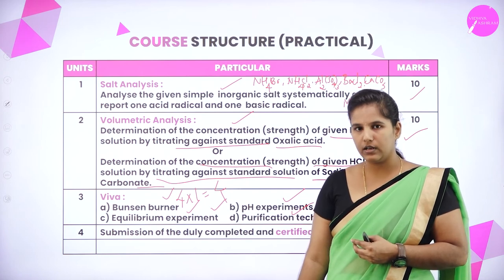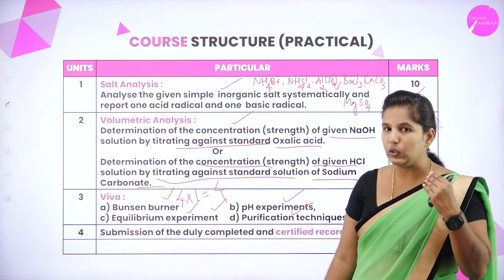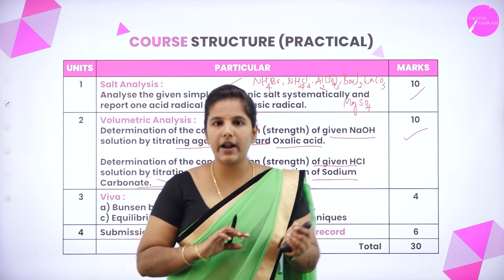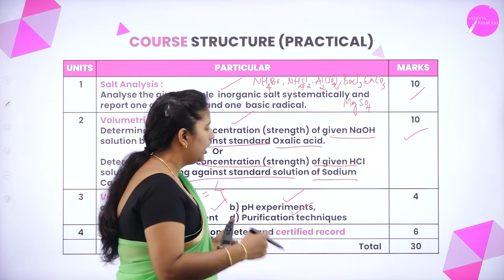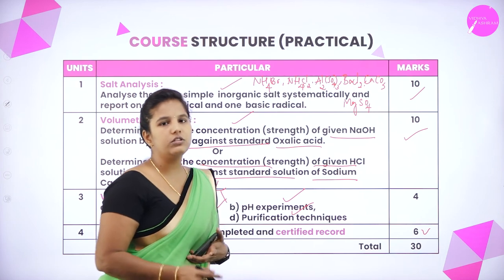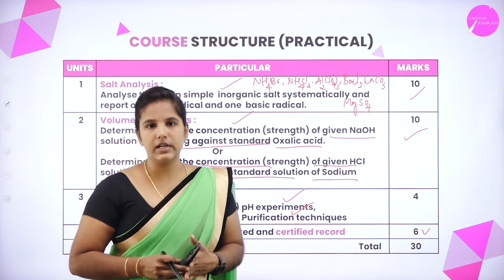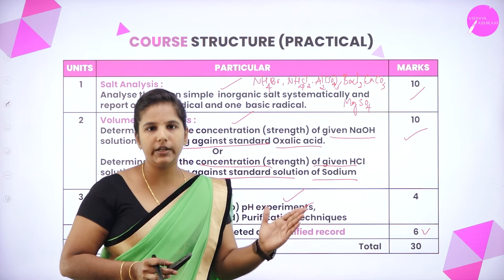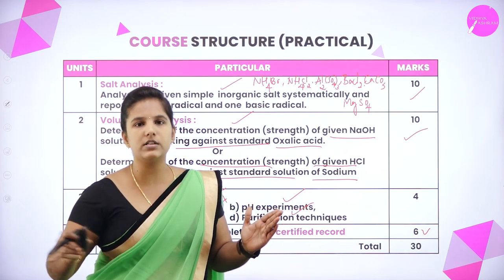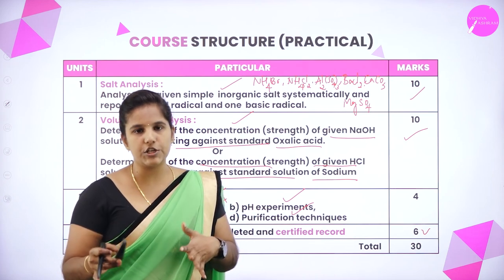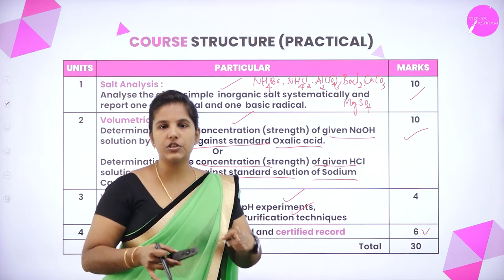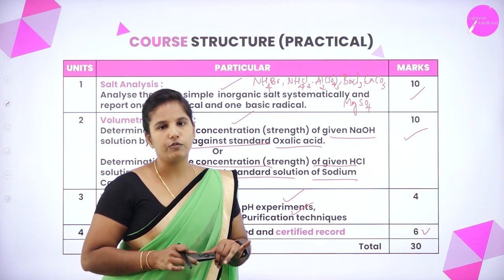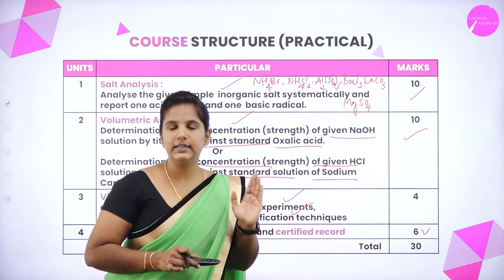You must also submit a duly completed certified record — if you write all experiments properly, you get 6 marks. So in total you can get 30 out of 30 from your chemistry practical: 10 from salt analysis, 10 from titration, 4 from viva, and 6 from the record submission.